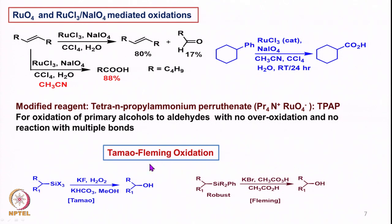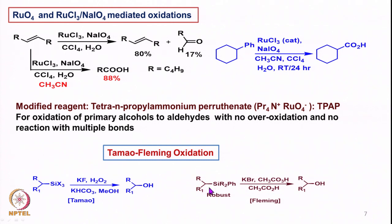Then we talked about the Tamao-Fleming oxidation with detailed mechanistic discussion. We saw how Tamao oxidation occurs under basic, neutral, or acidic conditions, and that it is a stereoselective oxidation. In a similar fashion, the Fleming-based oxidation was seen with the carbon-silicon bond having an aromatic part.